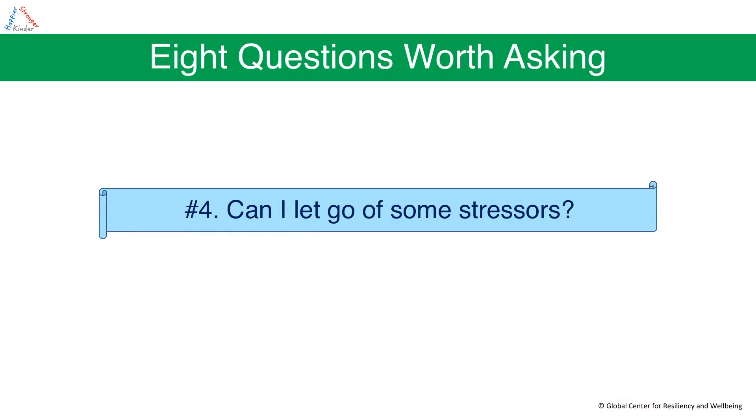Fourth question: can I let go of some stressors? Am I being too hard on myself? Do I have a very long to-do list? Why not create some not-to-do lists? Why am I letting people who shouldn't be in the story of my life write the title of my story? Having self-compassion, kindness to self, optimizing workload, and learning to say no when appropriate will all help you avoid optional stressors.